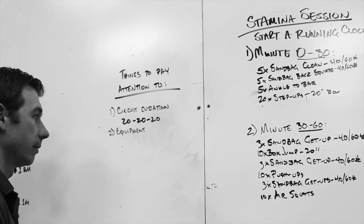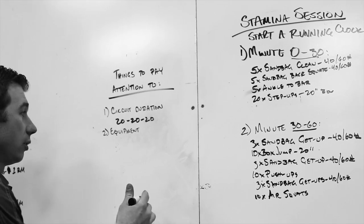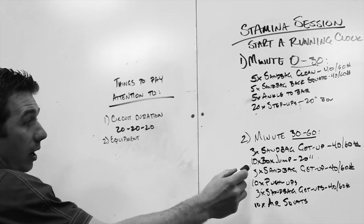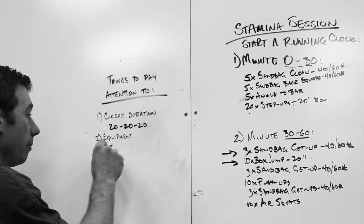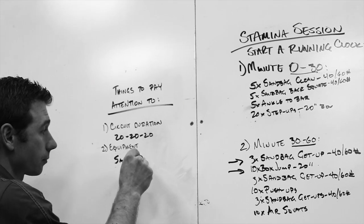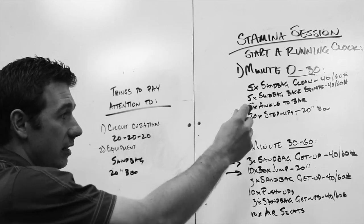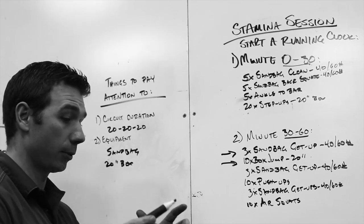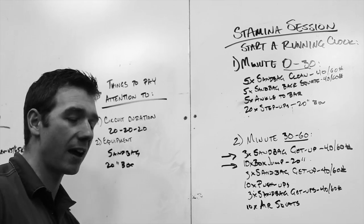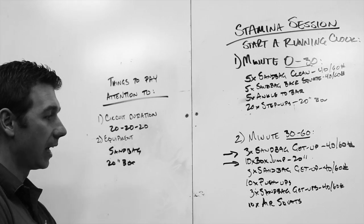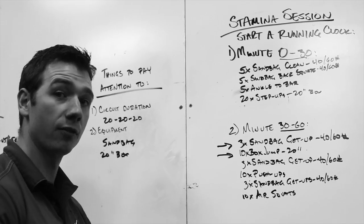The second thing to notice is equipment. As much as is possible for us to provide you with good design, we want to use the same equipment. The reason why I tell you to look at it is because you need to know what equipment you need. For example, on this one you're going to need a sandbag and you're going to need a 20 inch box. You don't necessarily need a ton of real estate, but you want to set your area up in a way that you can continuously work through without having to move your equipment from one part of the gym to the other part of the gym.